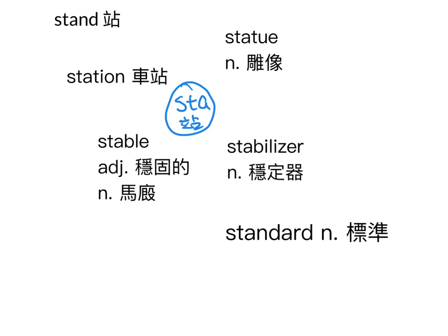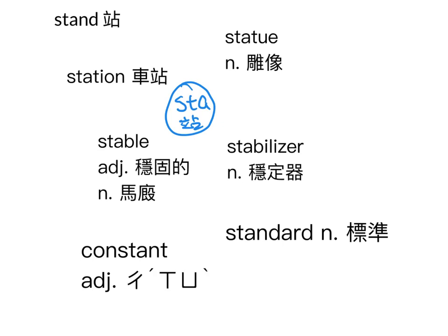还有这个字叫standard，当名词就是标准的意思，你就想你站立的一个地方那就是一个标准。还有constant，con是一起，sta是站，大家一起站了一阵子，constant这个单字有持续的、连续的意思。